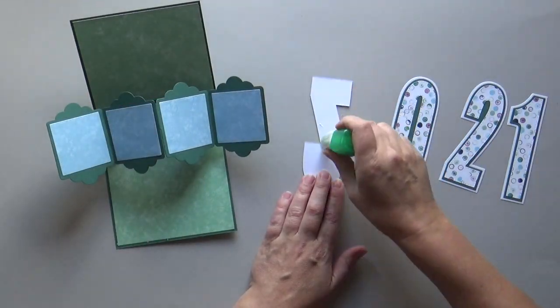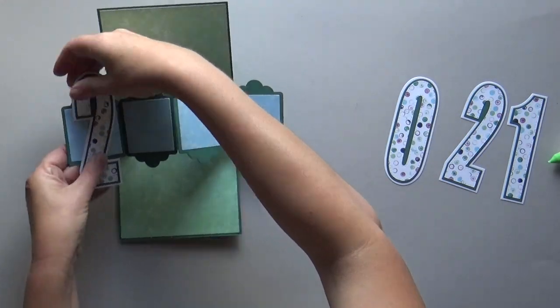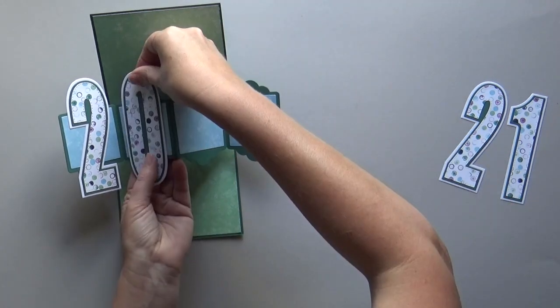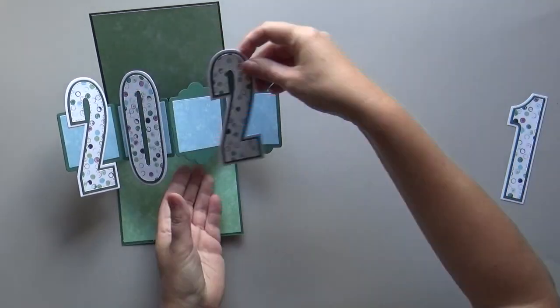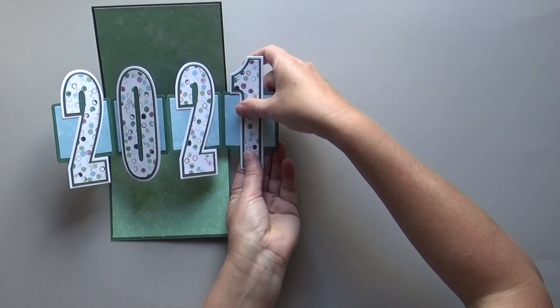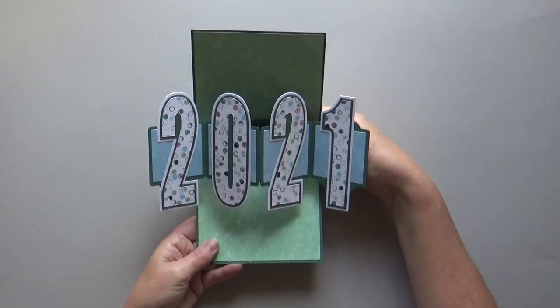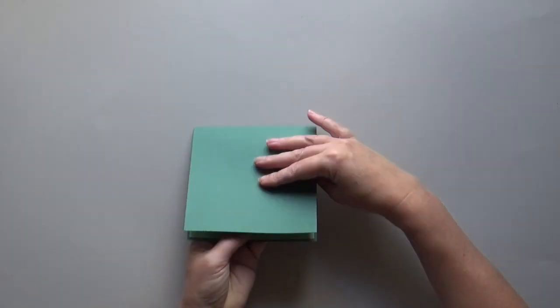Glue the numbers on the pop system. Make sure the numbers are glued in the middle of the squares so you won't see them once the card is closed. The twist and pop card is ready for further decoration.